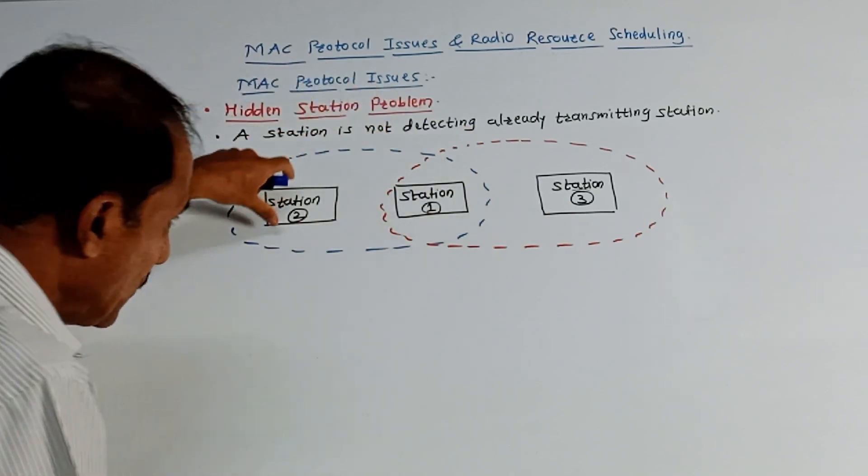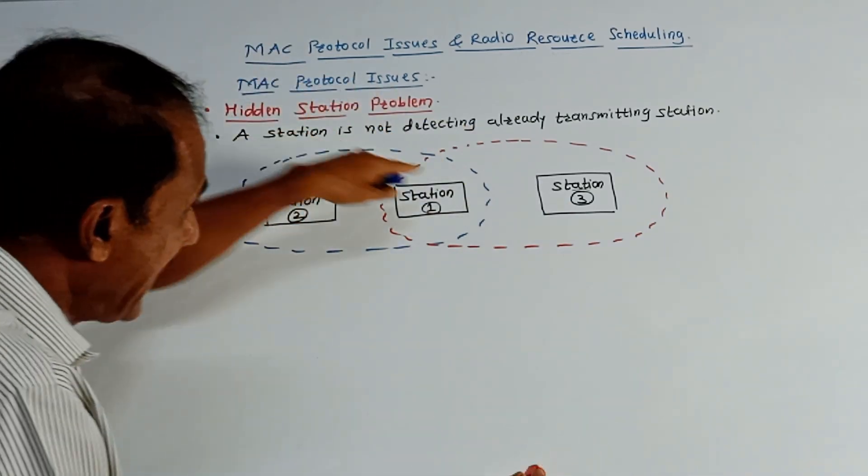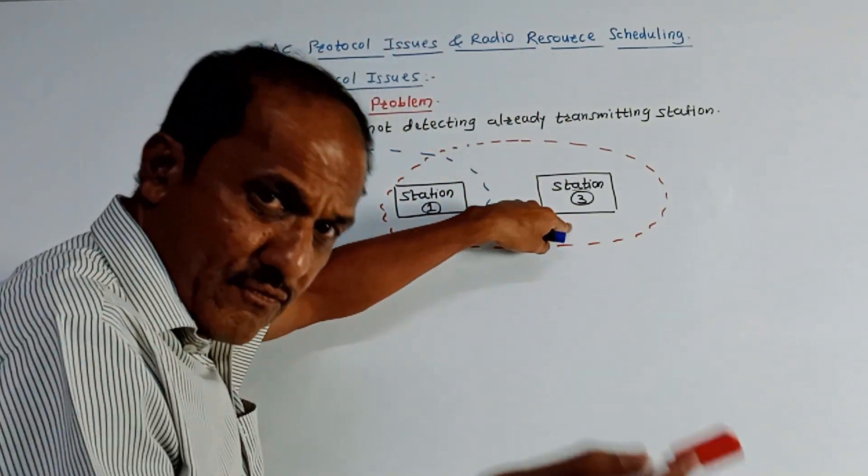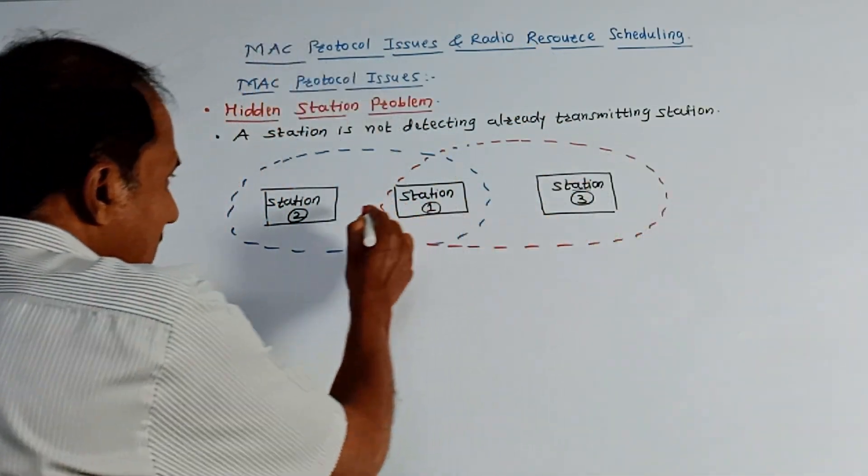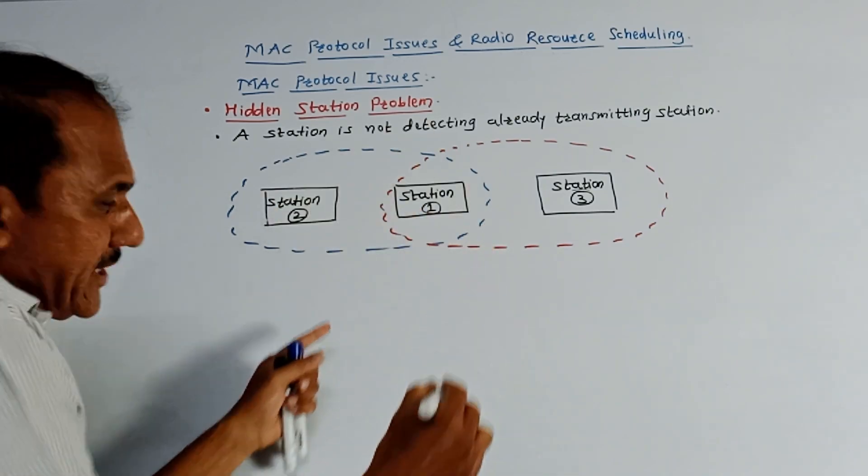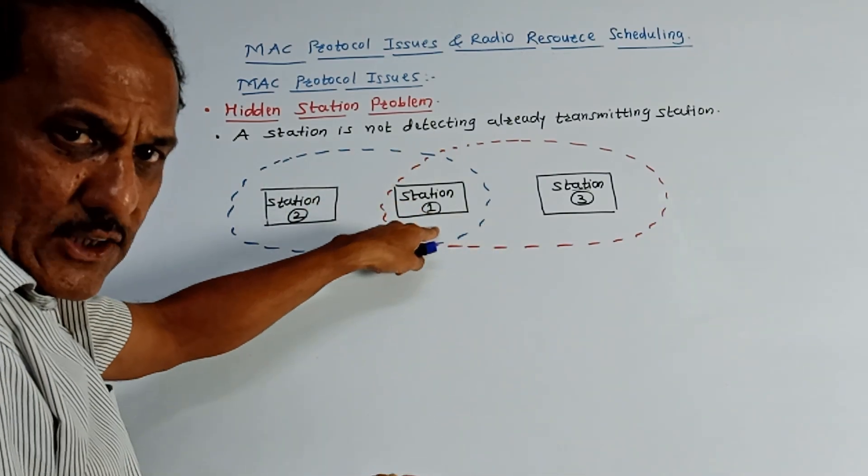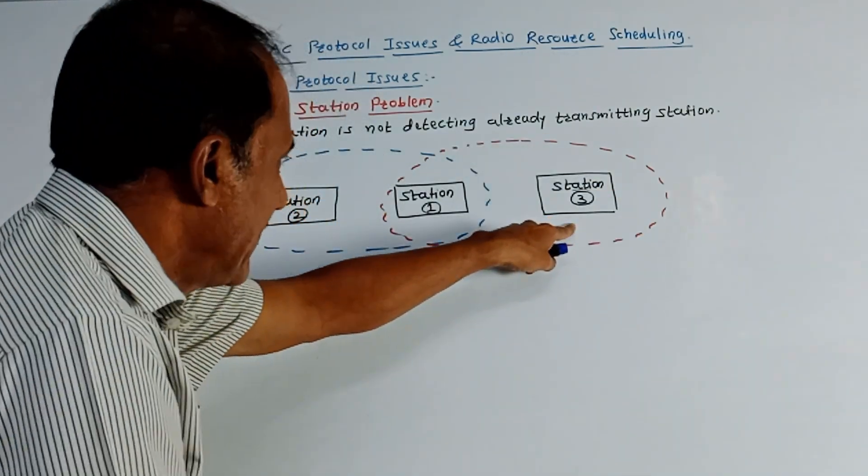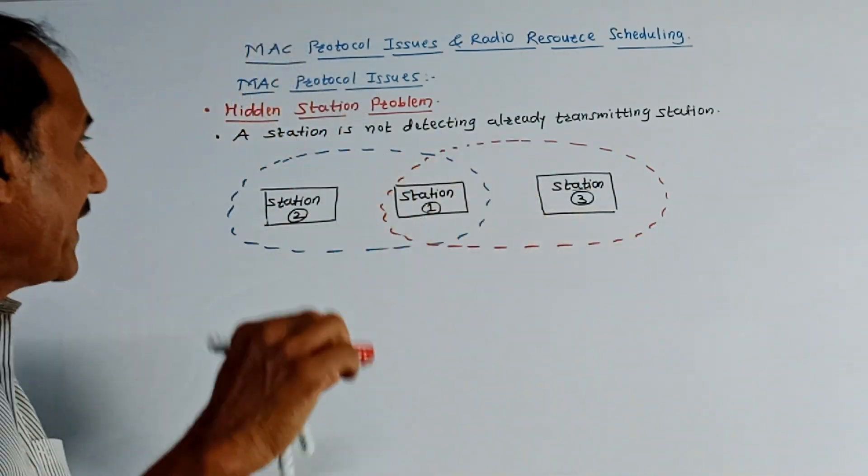But since station 2 is already transmitting and station 2 is not in the range of station 3, station 3 will feel that station 2 or any other station is not transmitting the data to station 1. So station 3 starts transmitting the data, and in that case the collision might occur.